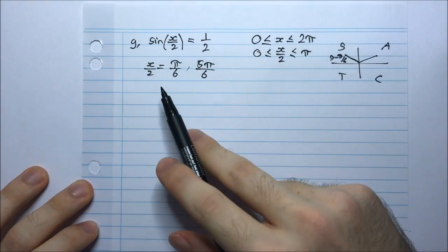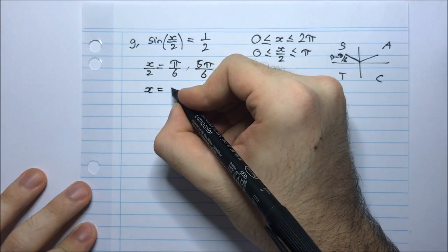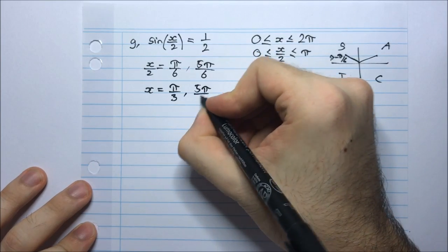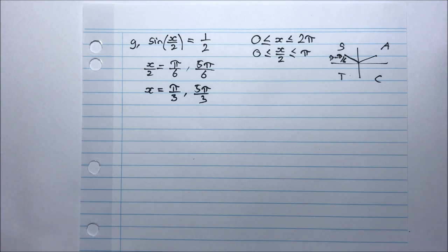But of course I'm solving for x. I'm not solving for x/2, so I just multiply everything by 2, and I get π/3 and 5π/3. And these are my solutions. And that's the end of question 11.